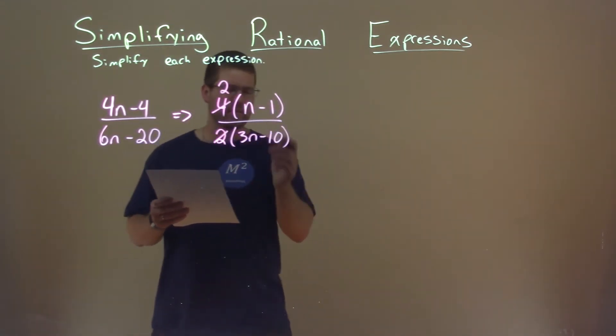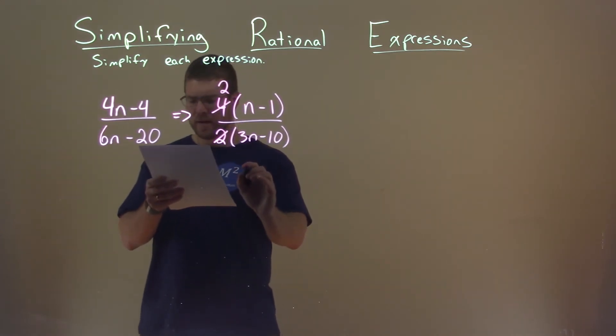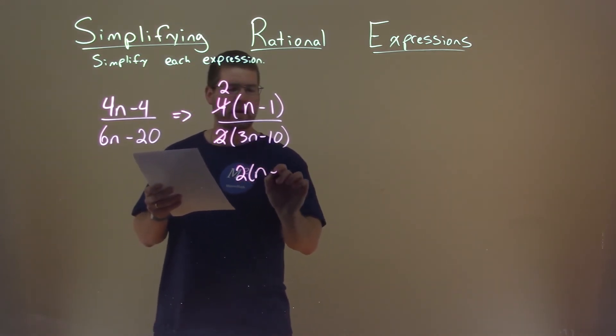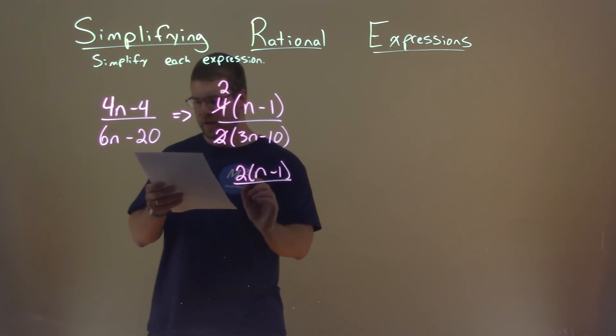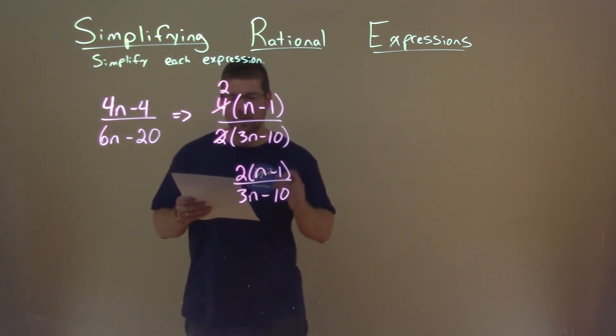Nothing else we can simplify here, so we break this numerator back down. 2 times n minus 1 over, in the denominator, 3n minus 10, and that is our final answer.